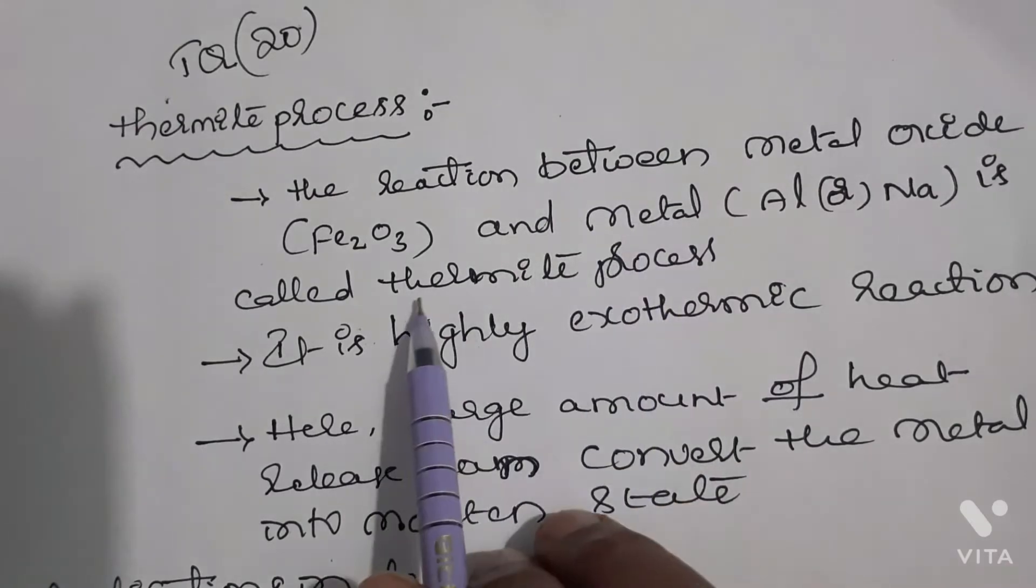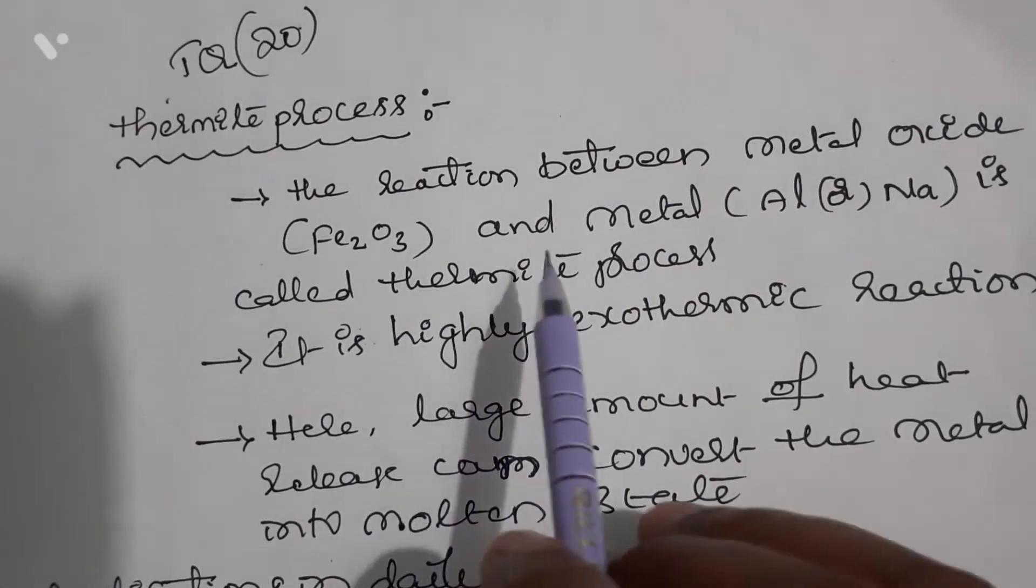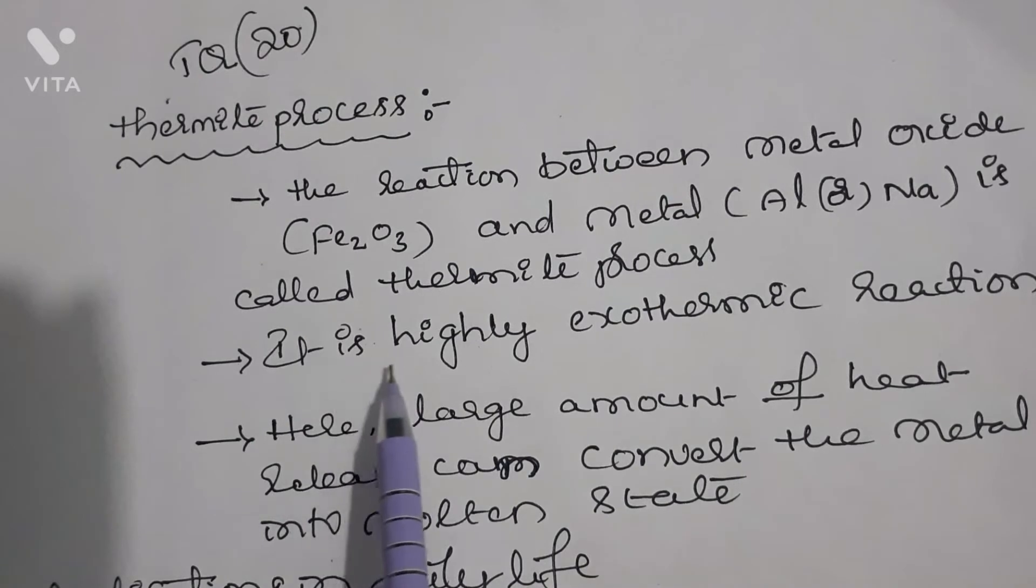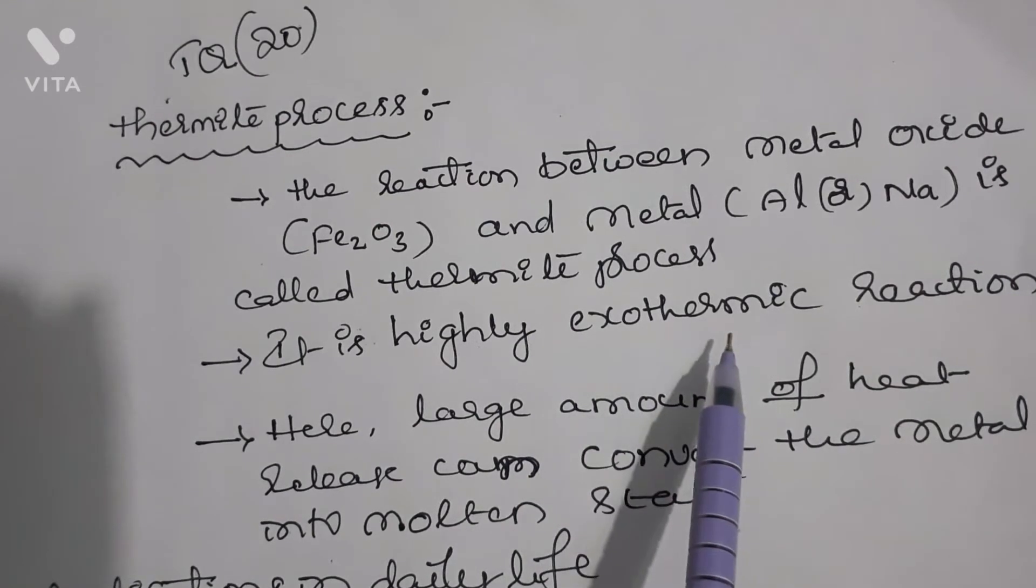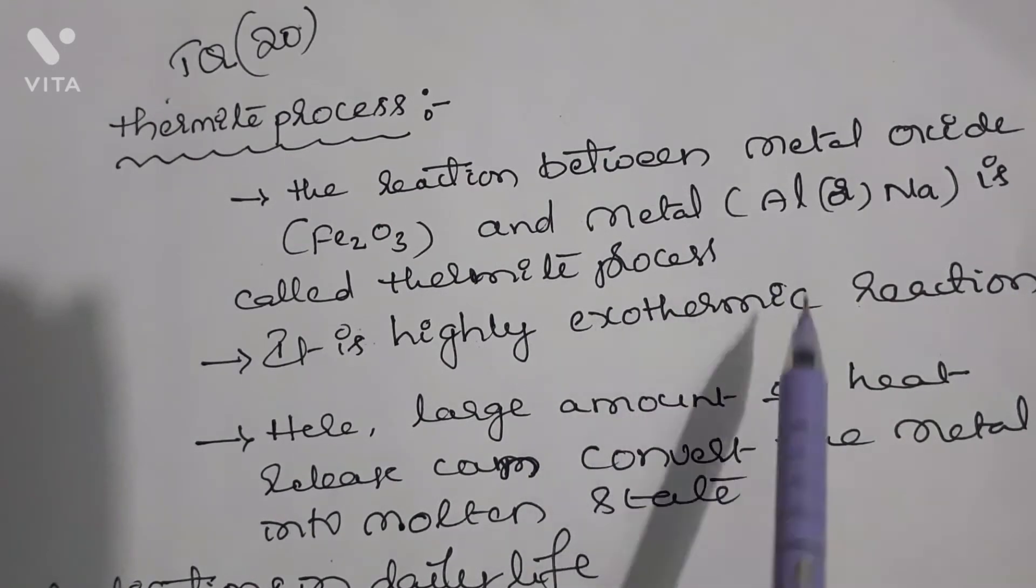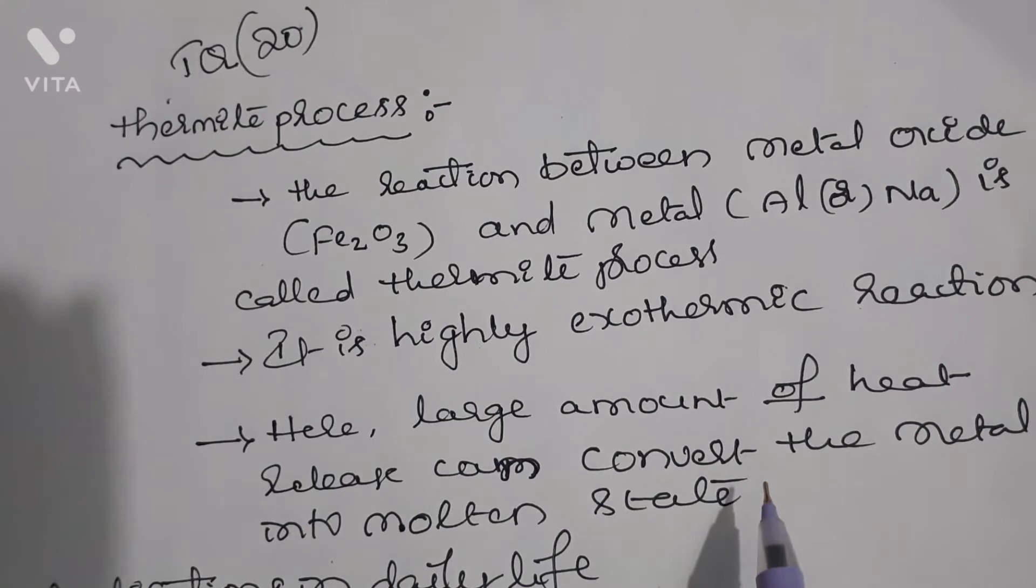In this process, a large amount of heat energy is released, so it is a highly exothermic reaction. Exothermic reaction means a chemical reaction in which heat is liberated or released. It is highly exothermic with a large amount of heat release taking place.